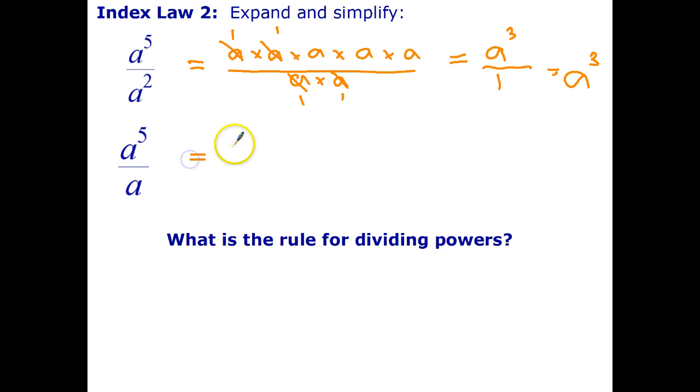Similarly, if I do the same thing here, A to the power of 5 over A, I can cross out one factor of A. Again, there's an implied one there. I'm not going to write it in this case. That just becomes A to the power of 4 over 1 or just A to the power of 4. Now, looking at those two examples, A to the 5th divided by A squared is A cubed. A to the 5th over A to the 1 is A to the 4th. See if you can write down the rule for dividing powers in English and or algebraically.